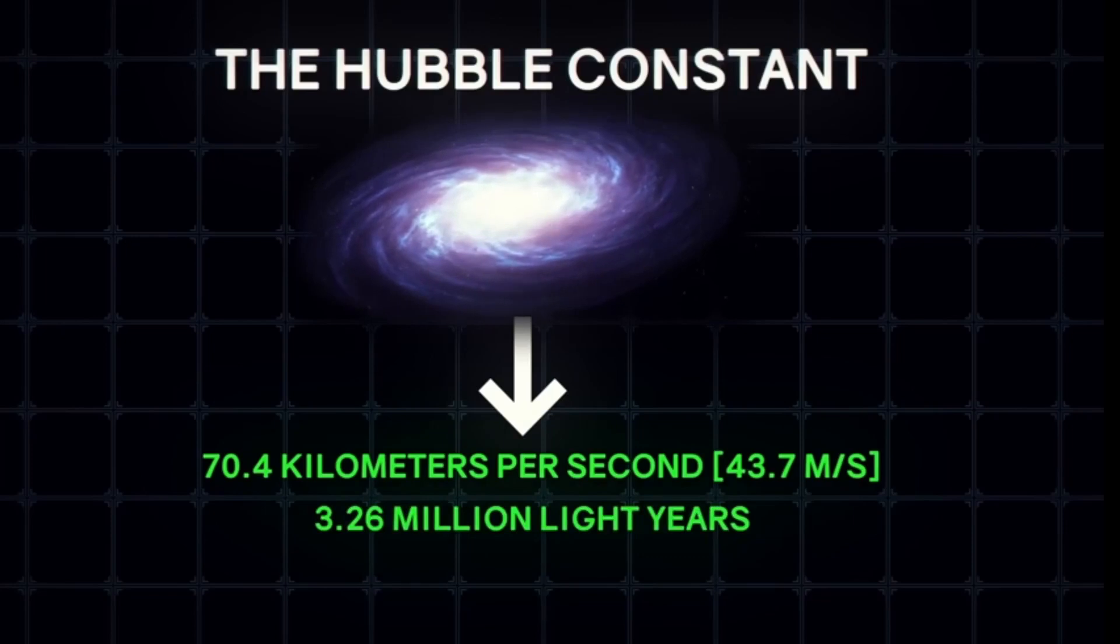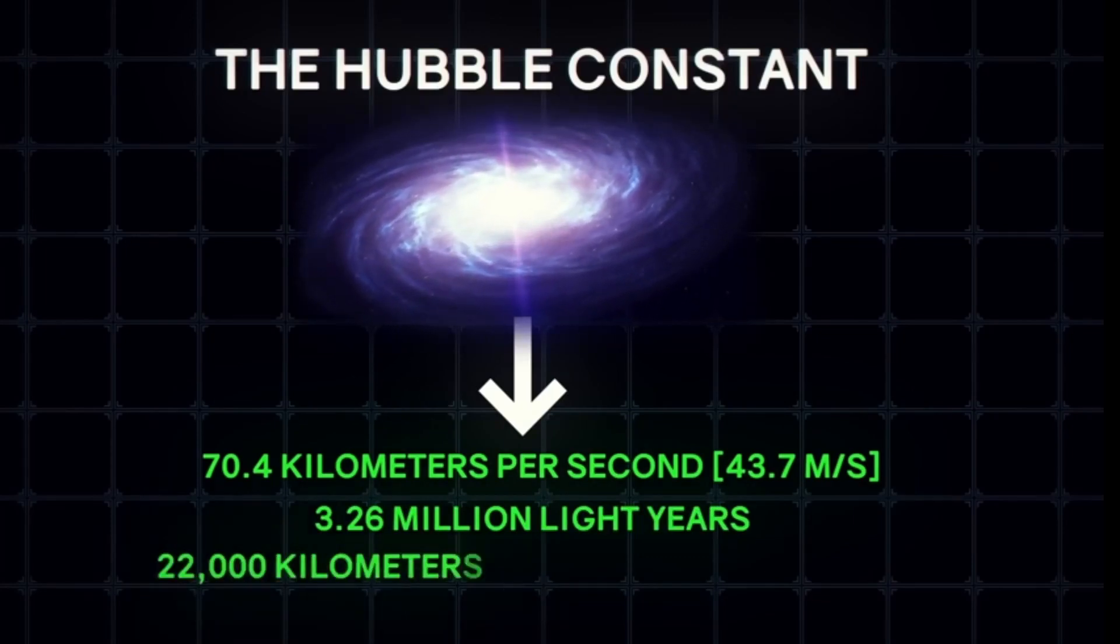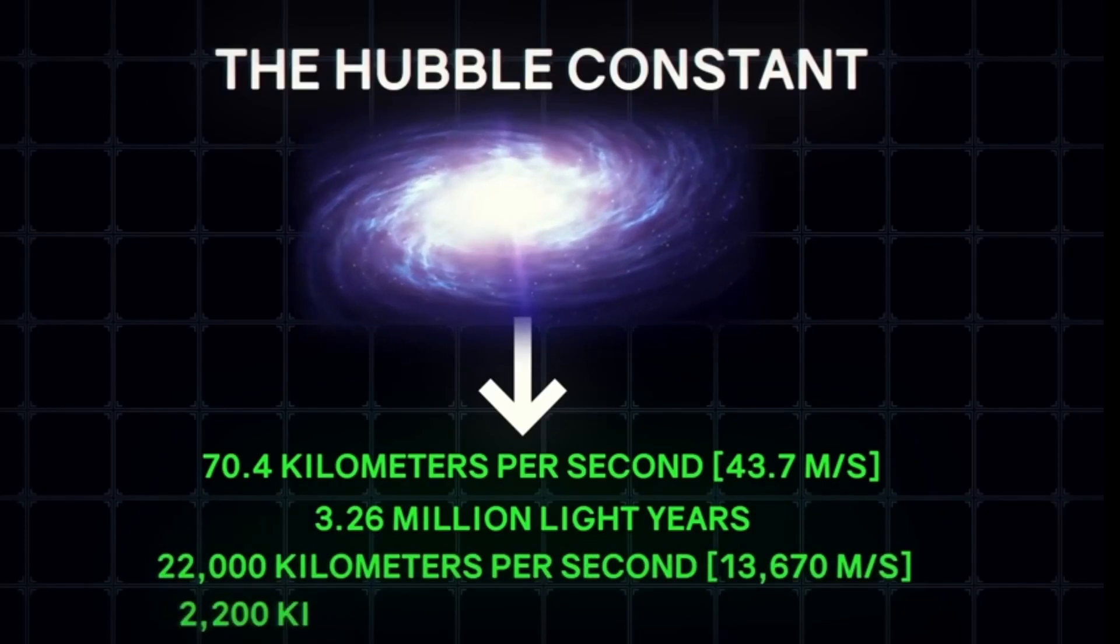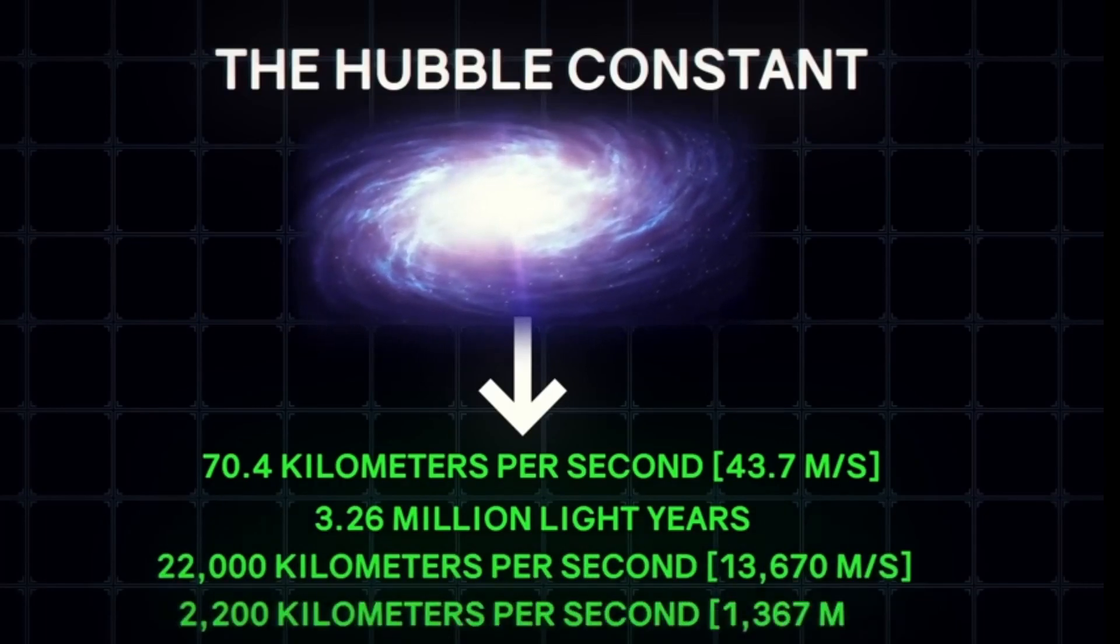At 1 billion light years away, the expansion of the universe is carrying galaxies away from us at 22,000 kilometers per second, or about 7% of the speed of light. But at 100 million light years away, this speed is only 2,200 kilometers per second.